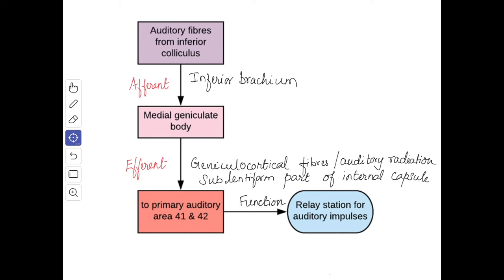The afferents of the medial geniculate body are the auditory pathway through the lateral lemniscus, either directly or after relay in the inferior colliculus. These fibers pass through the inferior brachium. The efferents pass through the sublentiform part of the internal capsule to the primary auditory area in the temporal lobe, areas 41 and 42. The function is to act as a relay station for auditory impulses.